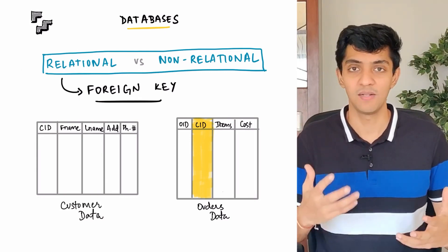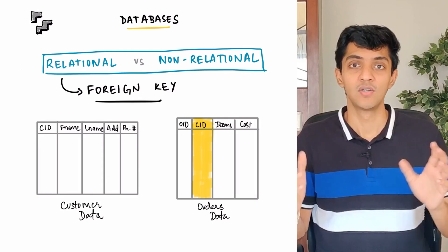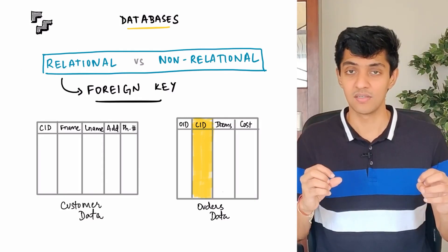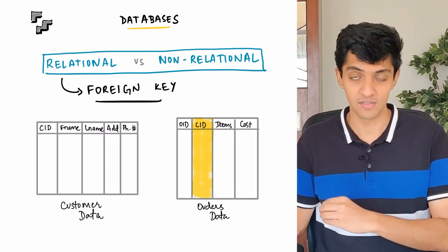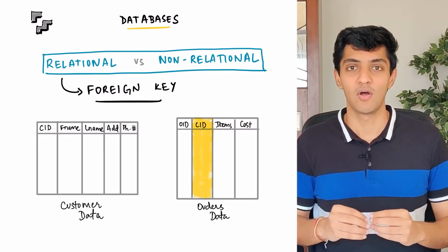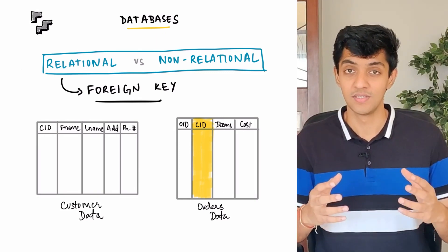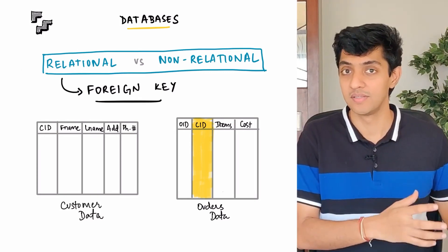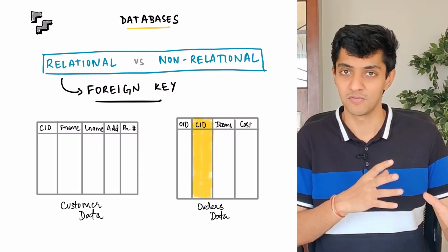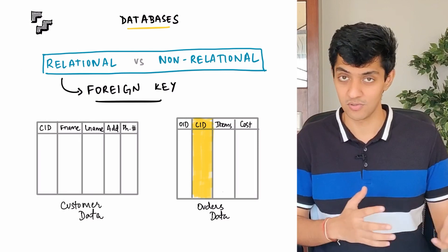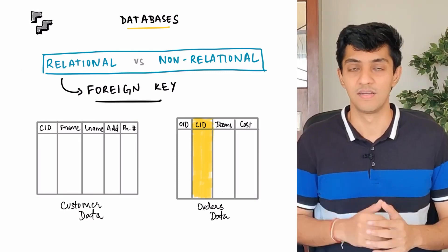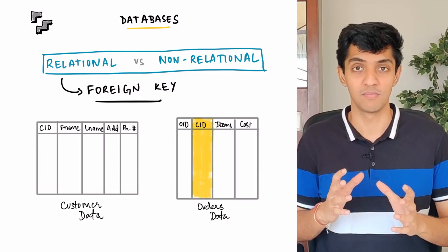So a foreign key essentially helps in mapping or matching two different tables in a relational database. Now the term relational comes in because you're able to relate one table to the other using the keys that we just spoke about. Now in direct comparison, non-relational databases usually do not have any relation between the tables. And instead of storing the data in a tabular format in the form of rows and columns, they usually store data in the form of a key value pair or a JSON object.